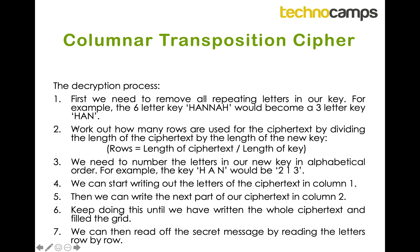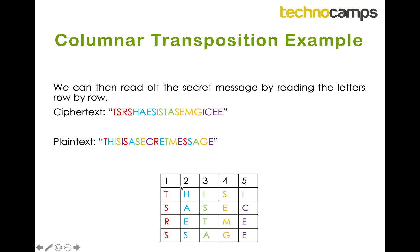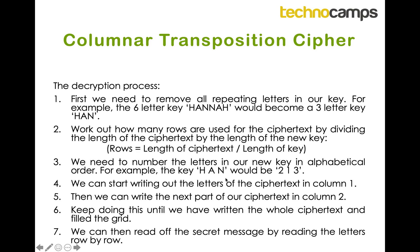Step two is the same as before — working out how many rows we have — but this time we divide the length of the cipher text by the length of our new reduced key, not the original. In this example that would be the length of the cipher text divided by three (the length of 'han'). Step three is figuring out the order of our columns. This time instead of numbering them in order of appearance, we number them in alphabetical order of the key letters. For 'han': A comes first alphabetically so it is column 1, H is next so it is column 2, and N is column 3. So when we write out the grid the column order would be 2, 1, 3.